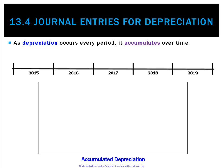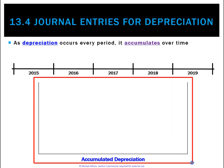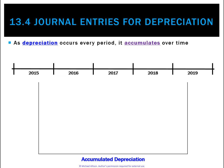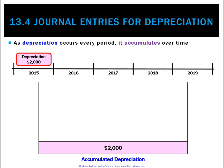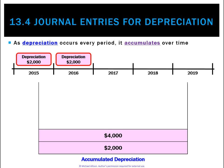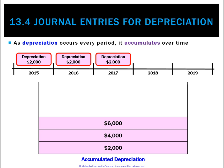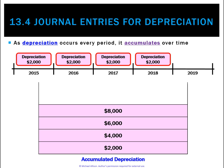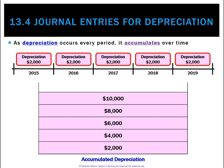Every period we charge depreciation for an asset, and over time it accumulates. We can think of depreciation as gathering together in a big pot, which we call accumulated depreciation. For example, in 2015 we depreciated $2,000 of a non-current asset. After two years we've charged $4,000, in the third year $6,000, and by the fifth year the accumulated depreciation kept rising, representing the total depreciation charged over the asset's useful life.